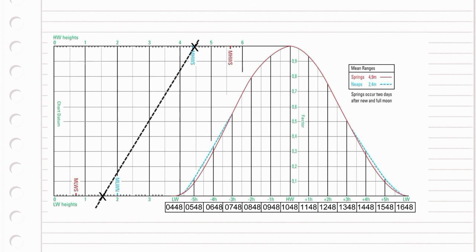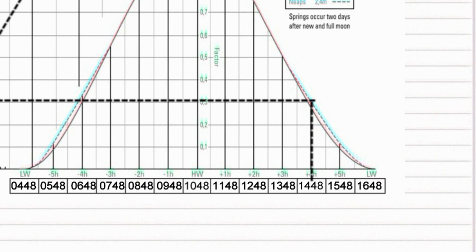First connect your height and low water marks, then draw a line from the height of the tide you want until it joins the line. A further line horizontally will connect with the tidal curve, and one more going down to the time scale will give you your answer.